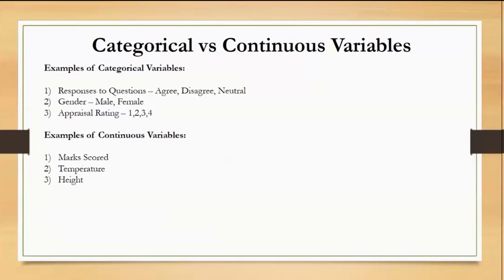Before we proceed further, let's get one thing clear. I am talking about two types of variables: one, categorical variables, which means variables which have only a few categories in them like yes or no, malignant or benign, high, low or medium, etc.